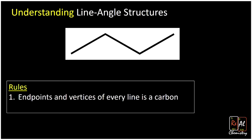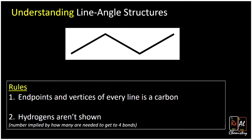Let's look at those rules explicitly written out. Two rules: endpoints and vertices of every line is a carbon, and hydrogens aren't shown — instead, the number of hydrogens is implied by however many we need to get to four. Let's look at the first carbon again. We see that we have one bond going to another carbon. If we need four bonds total, then we need three hydrogens — two, three, four bonds all going to hydrogen to total up to four. So that means even though I don't show those three hydrogens on the far left carbon, it has three hydrogens. And if I look at one of the middle carbons, it has one, two bonds to other carbons. So how many hydrogen bonds must it have to get to four? Two more.